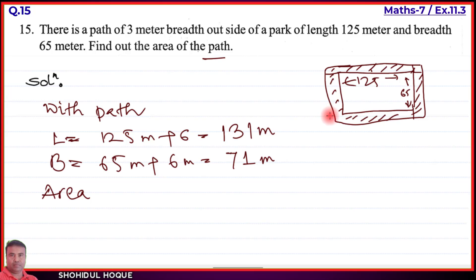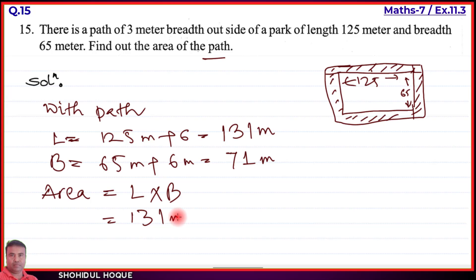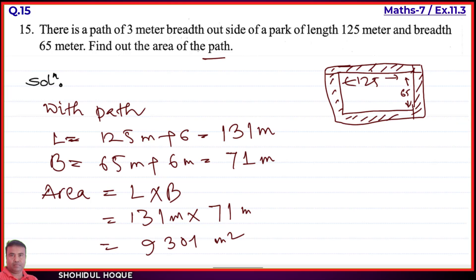Now we find the area of the outer rectangle (with path). Using the formula: Area = Length × Breadth = 131 × 71 = 9301 meter square.